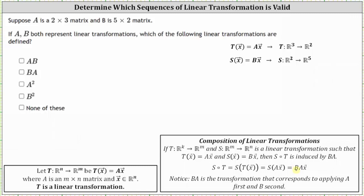For our first example, AB: we apply the transformation associated with matrix B first — that is S, which maps from R2 to R5 — and then the transformation associated with matrix A, which is T, from R3 to R2. For the linear transformations to be defined, the codomain after the first transformation must equal the domain for the second. Here, the codomain is R5 but the domain is R3, so AB is not defined.